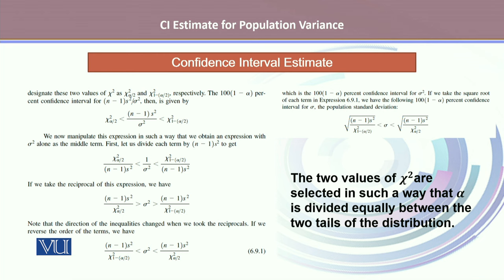If we were to take the square root of each term in this given expression, we have the following 100(1-α)% confidence interval for sigma, that is the standard deviation. So the population standard deviation confidence interval can be obtained as the square root of (n-1)s² divided by the chi-square.